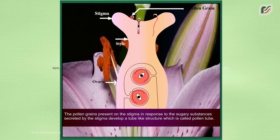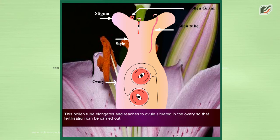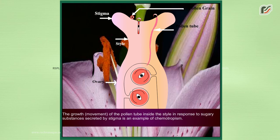The pollen grains present on the stigma, in response to the sugary substances secreted by the stigma, develop a tube-like structure called the pollen tube. This pollen tube elongates and reaches the ovule situated in the ovary so that fertilization can be carried out. The growth or movement of the pollen tube inside the style in response to sugary substances secreted by the stigma is an example of chemotropism.